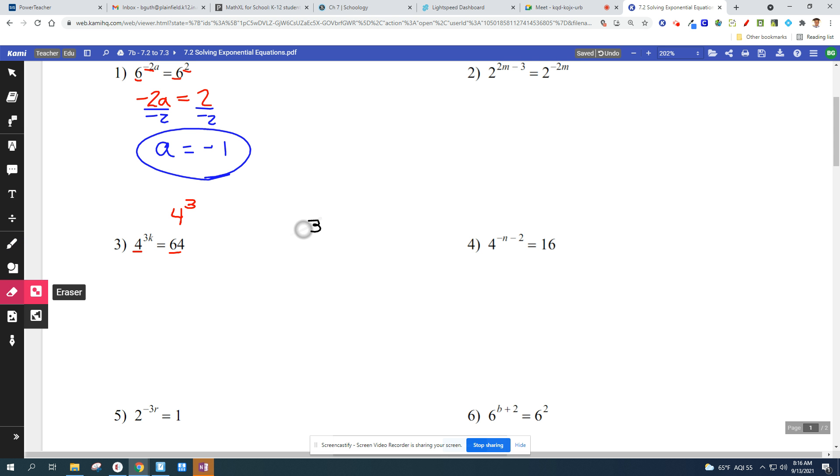4 to the 3k equals 4 to the third. I'm going to write that underneath. 4 to the 3k equals 4 to the third power. So essentially, I'm just trying to get a match. I want those base 4s to match because after that, all I have to do is look at the exponents. 3k must equal 3. You can do that problem in your head. K has to equal 1. So skip a step if you can. Divide by 3 to isolate the variable. K equals 1.